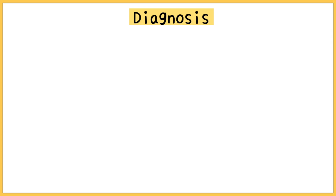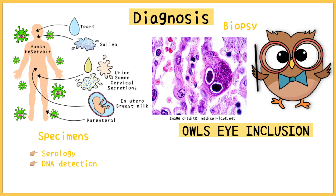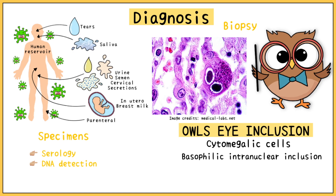To diagnose CMV, any of the body fluids that transmit the disease can be used as specimens for serology or DNA detection. Biopsy reveals owl-eye inclusion bodies, which are also called cytomegalic cells. These are basophilic intranuclear inclusions resembling owl eyes. This is why it is also called cytomegalic inclusion disease.